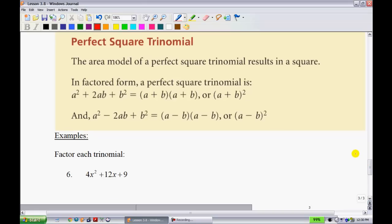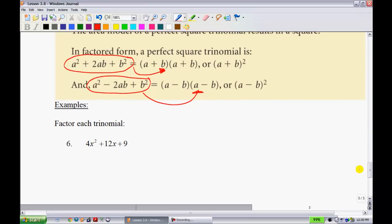So we're going to deal with polynomials in the form of a²+2ab+b² and also in the form of a²-2ab+b². If you take a look right here at what happens, it says the area model is a perfect square trinomial result in a square. In factored form, a perfect square trinomial is the following. If you have something that's in this format, and you factor it out, you're simply going to have (a+b)². When you have something in this format, you're going to have (a-b)².